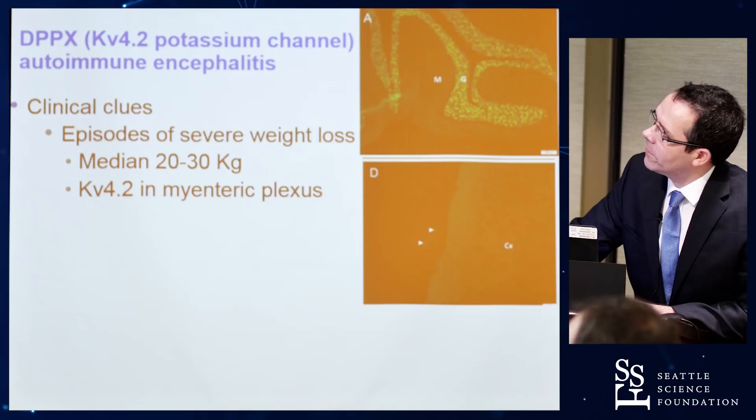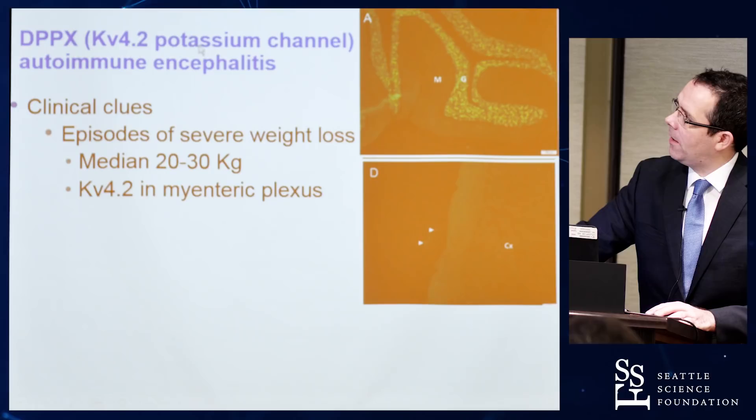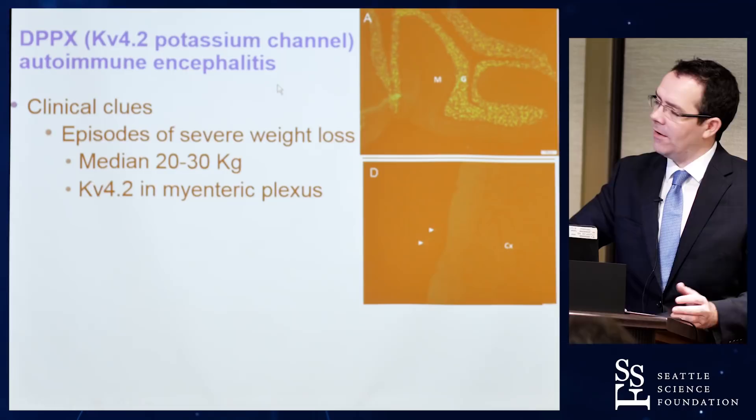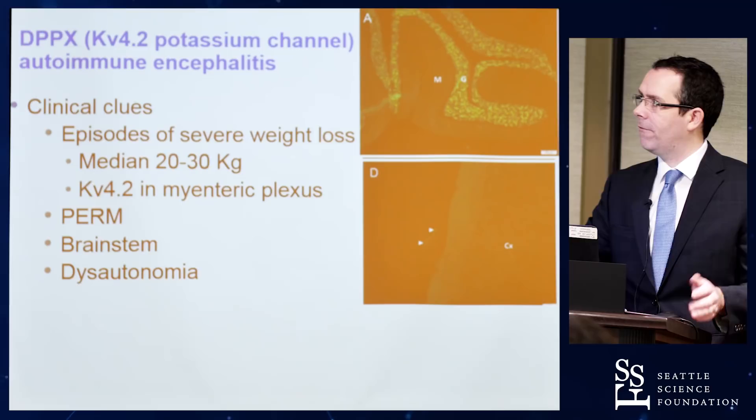Another antibody is DPPX, which is interesting in that it is associated with severe episodes of weight loss — up to 20–30 kilograms — because this potassium channel is found in the gut in the myenteric plexus. Patients present with low-grade encephalitis and can have PERM — progressive encephalomyelitis with rigidity and myoclonus.